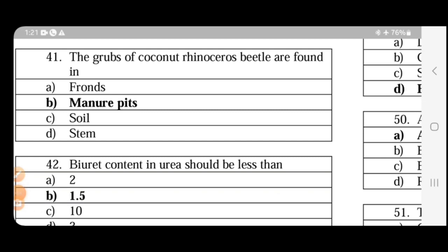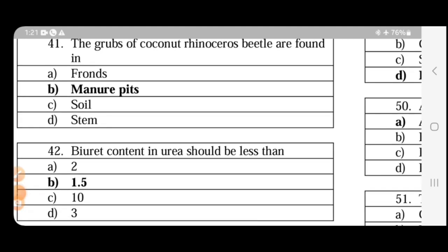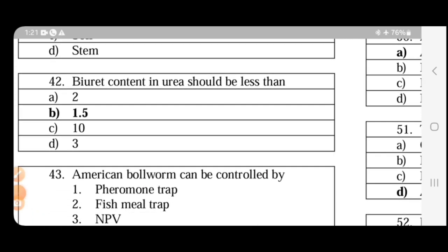The grubs of coconut rhinoceros beetle are found in manure pits. The grubs are sluggish, stout, and C-shaped with a pale brown head and found at a depth of 5 to 30 cm. Next question: biuret content in urea should be less than 1.5%.